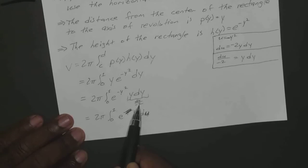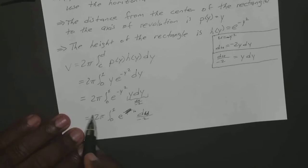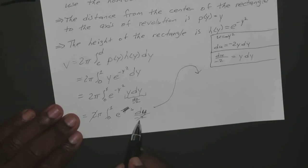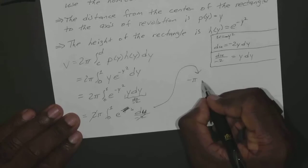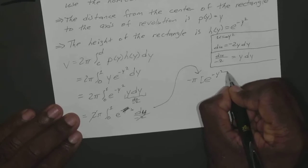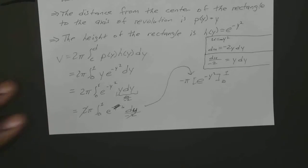So since that du is negative, well du over negative 2, the negative 2 here and the 2 cancels out. Should have enough room to finish this up. So you end up with negative π. Integral of e to the u du is just e to the u, so it's e to the negative y squared from 0 to 1. So just kind of a refresher to the substitution method for integration.